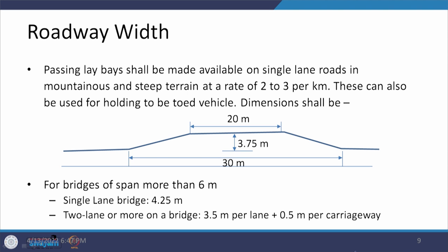The passing lay-by has a flared section 3.75 meters wide, extending 30 meters towards the existing carriageway and 20 meters on the other side. These need to be provided at a rate of 2 to 3 per kilometer depending on terrain conditions, allowing vehicles to pass slow-moving or broken-down vehicles pulled to one side.